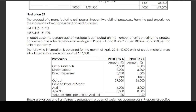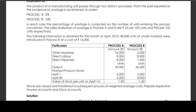Finished product stock April 1st: Process A 6,000 units, Process B 5,000 units. Finished product stock April 30th: Process A 40,000 units, Process B 8,000 units. Value of stock per unit on April 1st: Process A 1.20, Process B 1.65. Stocks are valued and transferred to subsequent process at weighted average cost. We are required to prepare respective process accounts and stock accounts.